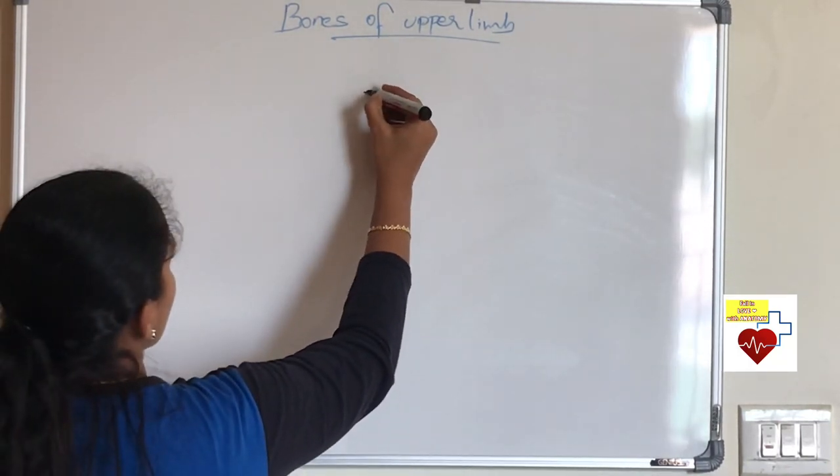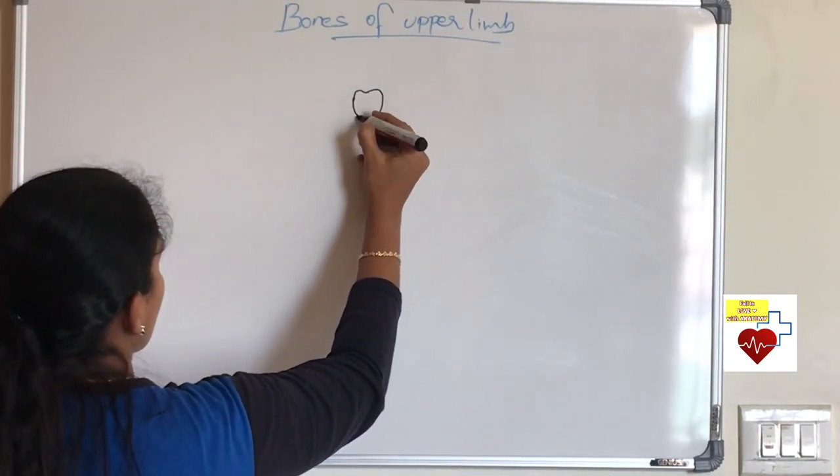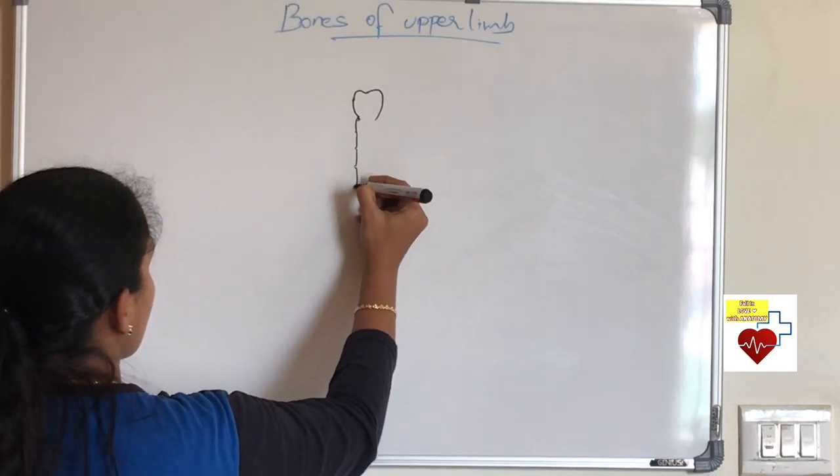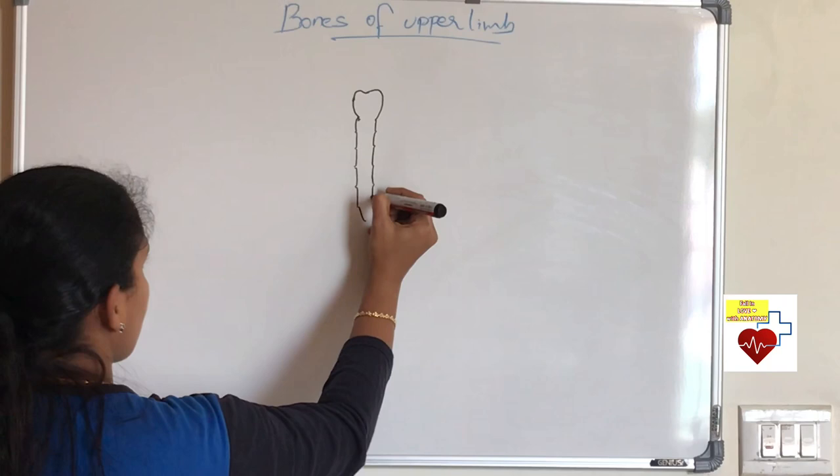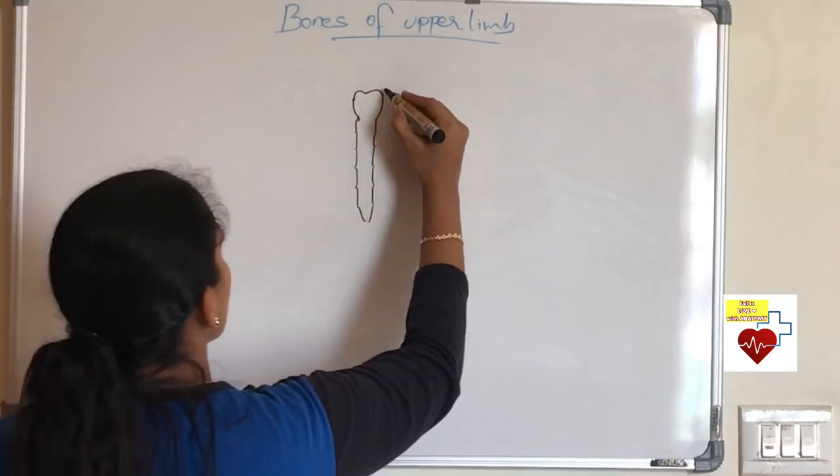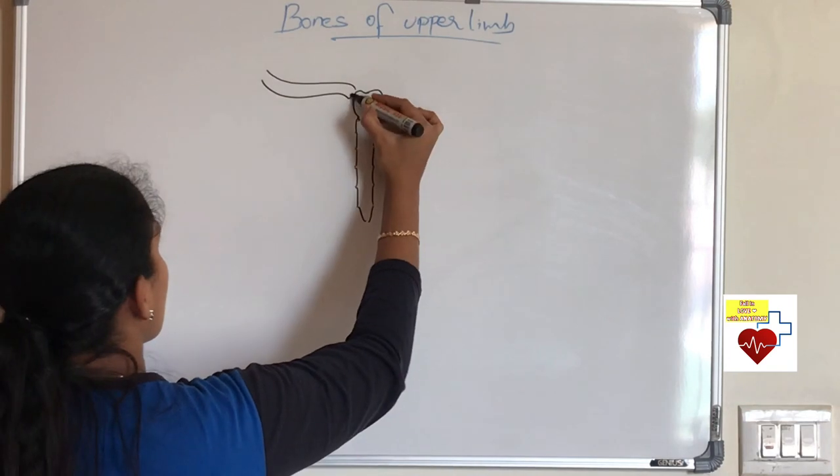We are considering sternum here for convenience. Yeah, it is not a bone of upper limb. You should know it has three parts: manubrium, body, and xiphoid process. It possesses facets for the articulation of 12 ribs. The one I am drawing now is clavicle.